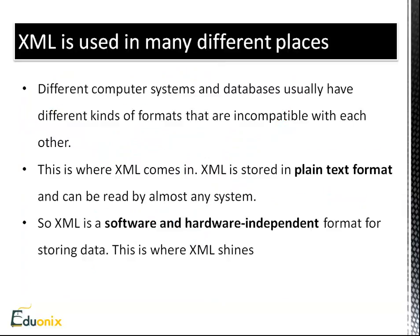XML is used in many different places. Different computer systems and databases usually have different formats that are incompatible with each other. But XML makes it so that one system can talk to another and share and transport data between each other, even though they're completely different platforms. Today a lot of web developers are replacing XML with JSON, but this is one aspect where XML outdoes JSON — it's very extensive and compatible with different kinds of systems. XML is a software and hardware independent format for storing data.